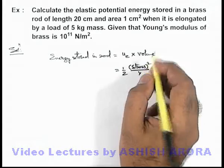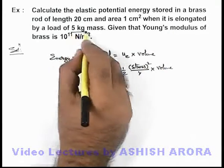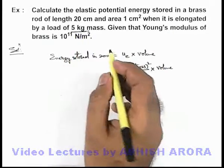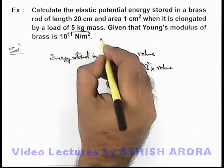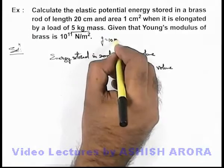And here we are given that it is elongated by 5 kg mass, so in this situation the weight is 50 newton if we take g to be 10 meters per second square.